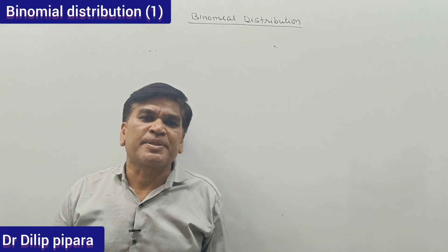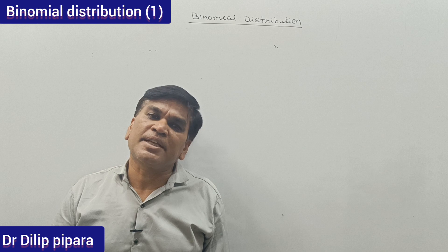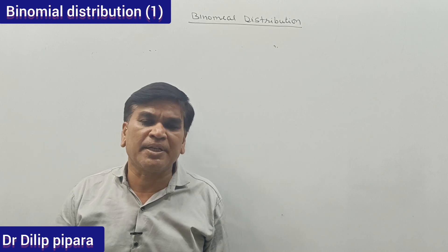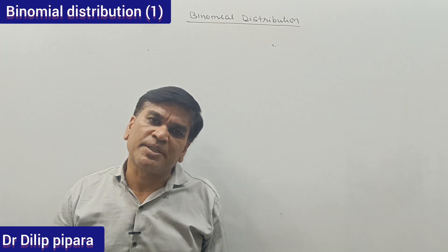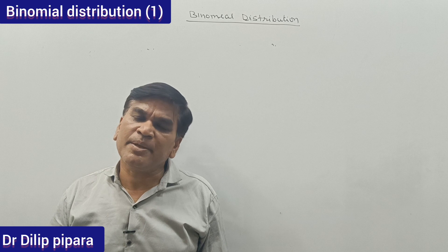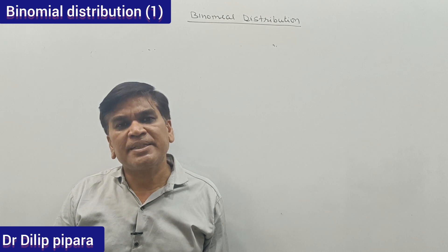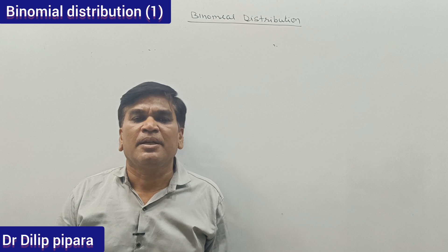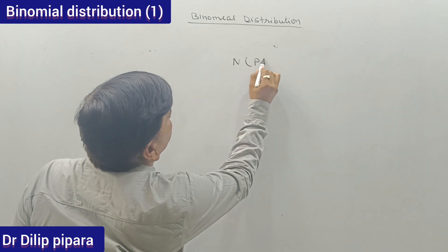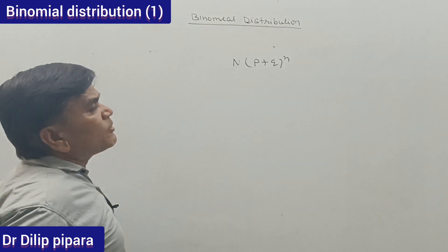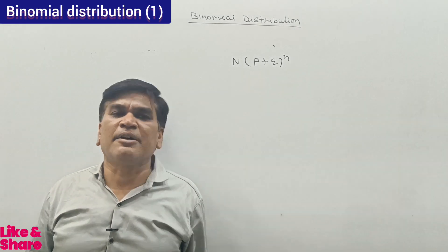In theoretical probability distribution, we have discussed what the theoretical probability distribution is and there are three major methods for calculating it: binomial distribution, normal distribution, and Poisson distribution. In the last video, we discussed how to expand the binomial distribution, how to use Pascal's triangle to solve it, and the major formula: N times (p + q) raised to power n.